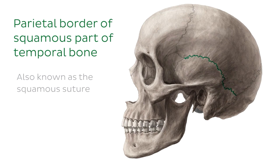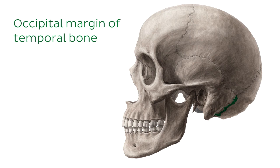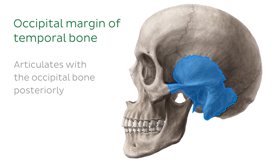Next we'll look at the occipital margin of the temporal bone. The occipital margin is where the temporal bone articulates with the occipital bone posteriorly. If we look at the image on the right, we can see the temporal bone articulating posteriorly with the occipital bone just here. The suture that connects these two bones is known as the occipitomastoid suture.